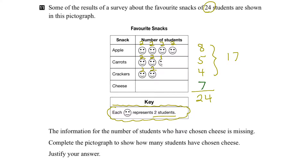Let's verify that. If I took 17 plus 7, does that equal 24? And it does. Another way to do it is simply take 8 plus 5 is 13, plus 4 is 17, plus another 7 is 24, and we know we've got the right answer.